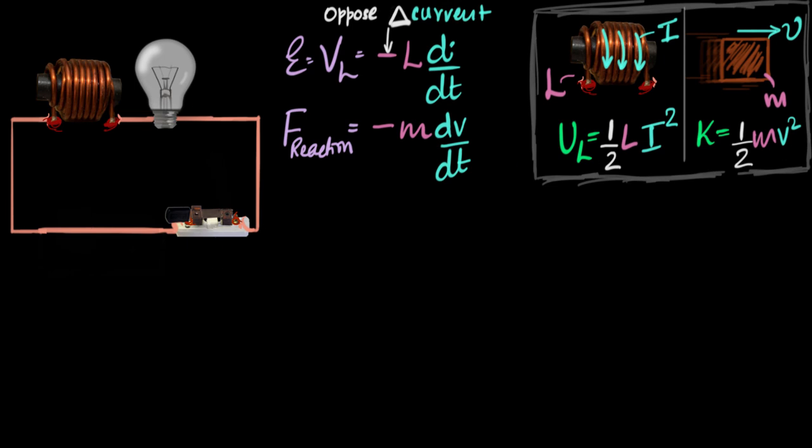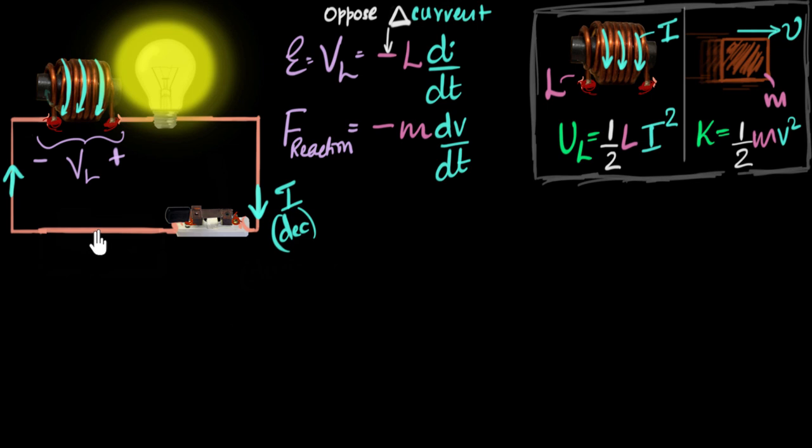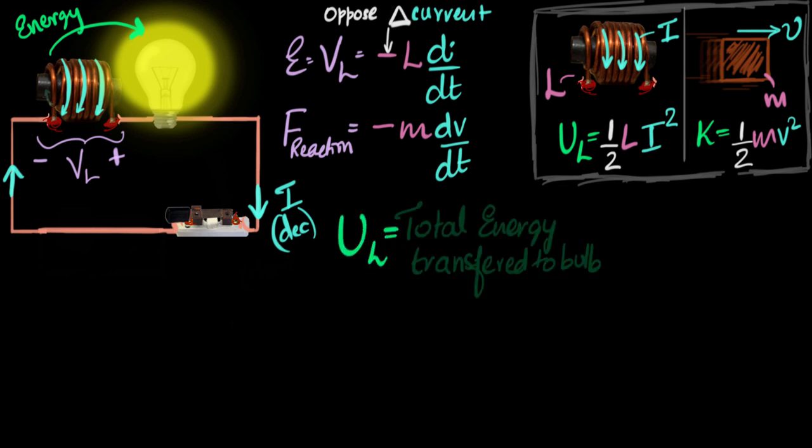So let's go back to the time when we just removed our battery. We know for the next few, I don't know, maybe milliseconds or microseconds, there will still be, the bulb will still be glowing. And during that time, the energy would be transferred to the bulb by the inductor. So since it's the inductor that's transferring energy to the bulb, if I can figure out how much is the total energy transferred to the bulb, that must be the total energy inside the inductor. If the inductor has transferred, let's say total of 100 joules, then I know the inductor had 100 joules to begin with. And so from this, I can say that the total energy inside the inductor must equal the total energy that was transferred to the bulb. But how do you calculate that?